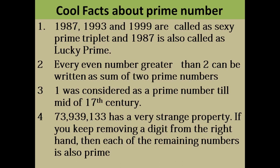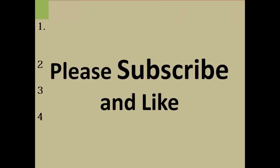The number 73939133 has a very strange property: if you keep removing a digit from the right, each remaining number is also prime. Remove the 3 at the end and 7393913 is prime; remove another digit and 739391 is again prime. This continues all the way down. I hope you liked this video — don't forget to subscribe and share. Thanks for watching!